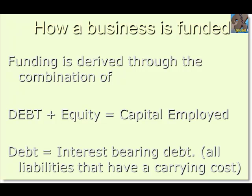We now have to consider how we create our total net operating assets. The first thing we do is establish what we call the funding base. The only two ways any business can be funded is through the combination of debt and equity. We take only the interest-bearing debt — those liabilities that have a specific carrying cost — and the combination of this debt and equity provides us with the funding base.